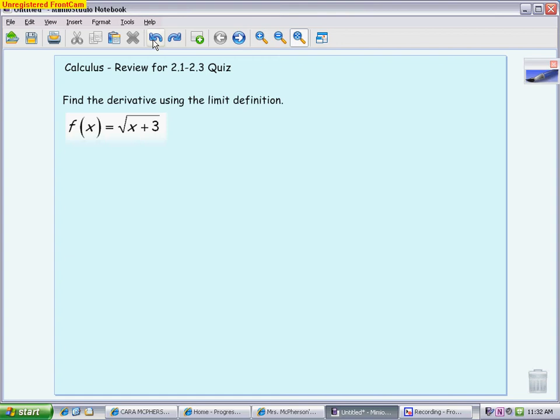First problem that you're looking at is find the derivative using the limit definition. It will use that wording, which is an indication to you that you cannot use the shortcuts. You can definitely use the shortcuts as a way to check, but you have to show the process using the limits.